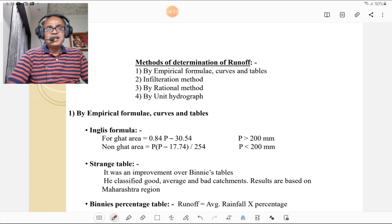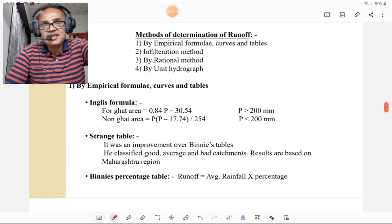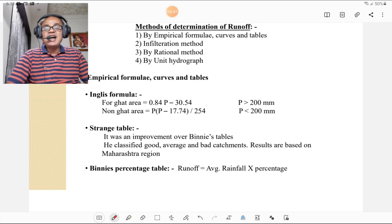First, by empirical formulae, curves and tables. Most famous formulae in Maharashtra for ghat section and non-ghat section is the Inglis formulae. For ghat section, the formula is runoff equals 0.84P minus 30.54, where precipitation is more than 200 mm. For ghat section, precipitation is more. And for non-ghat area, the formula is P times (P minus 17.74) divided by 254, where precipitation is less than 200 mm.